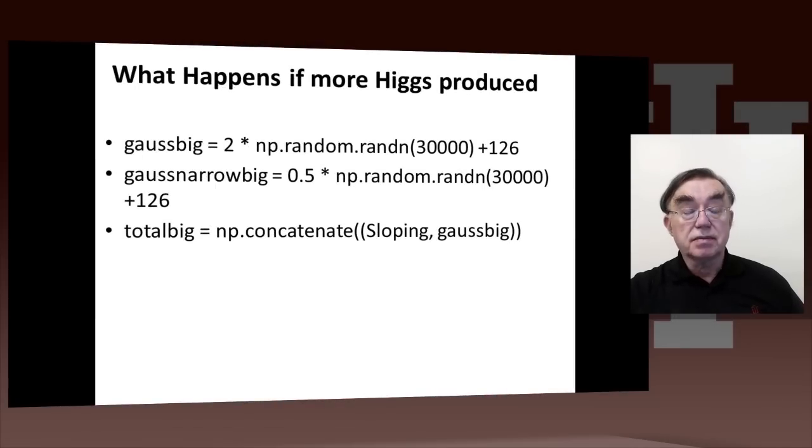Here's a more extreme comparison. Suppose we produce not 300 Higgs on that background, but 30,000 Higgs, so that's a factor of 100.